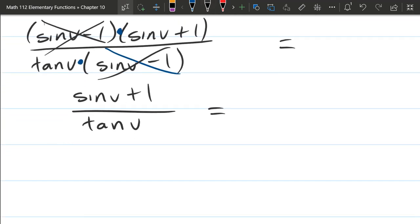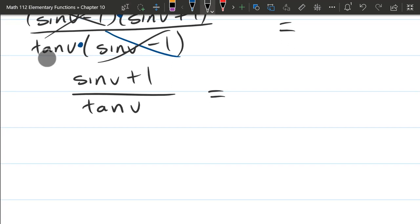But what I'm going to do is rewrite tangent as sine over cosine. And then we have multi-story fraction, so we're going to multiply by the reciprocal here.